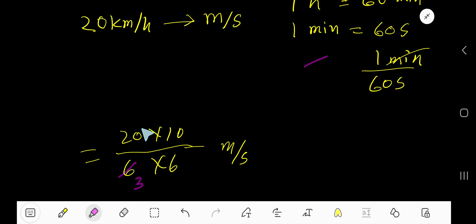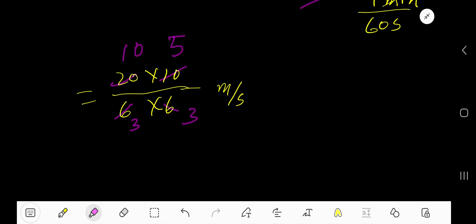Divide this 6 by 2, we'll get 3. Divide this 10 by 2, we'll get 5. So basically we are getting 10 plus 5, which is 50, and 3 times 3 is 9 meters per second.